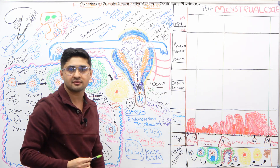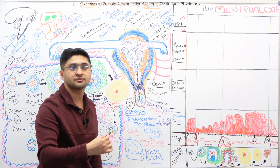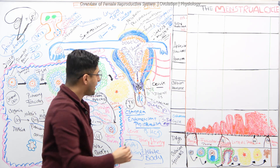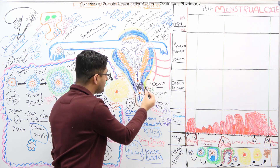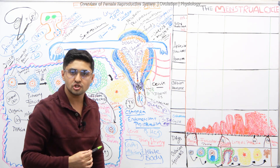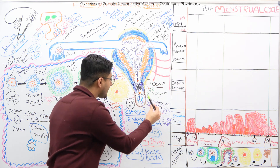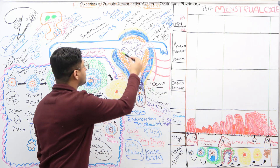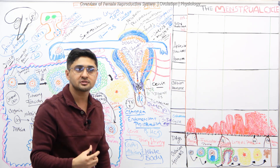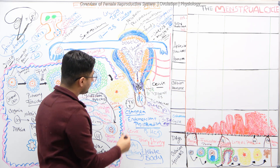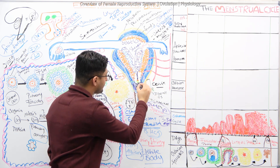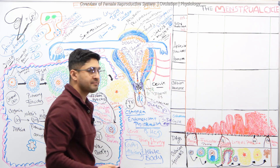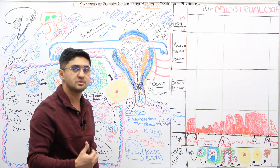The stratum basalis gives rise to the stratum functionalis. The stratum functionalis has further divisions: the apical layer is called stratum compacta, and the layer below that is called stratum spongiosum. The endometrium also produces uterine glands, which are very important. The cervical area has sphincter muscles — the cervix — which continuously produces mucus.